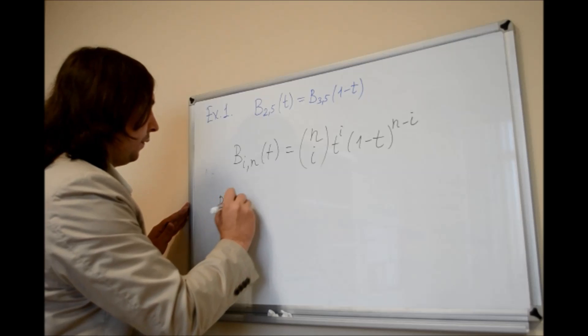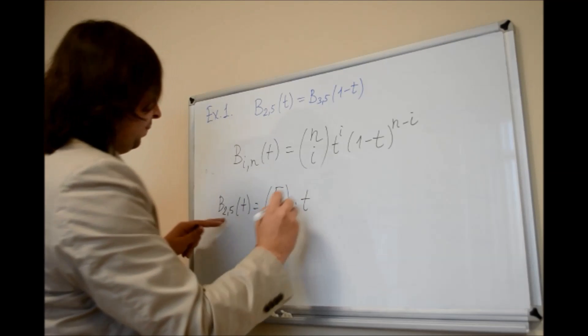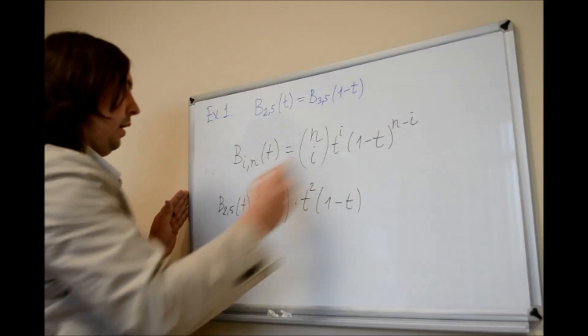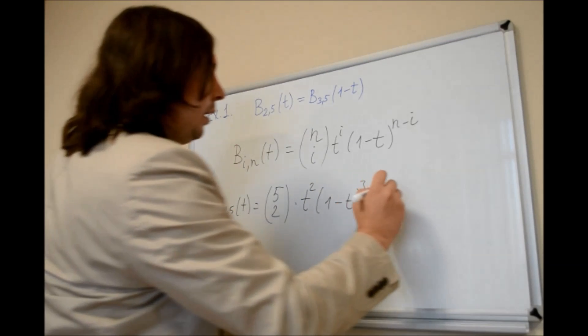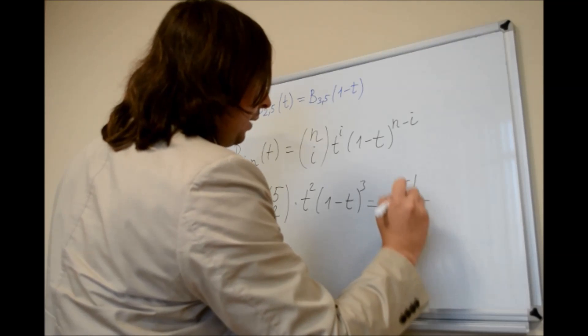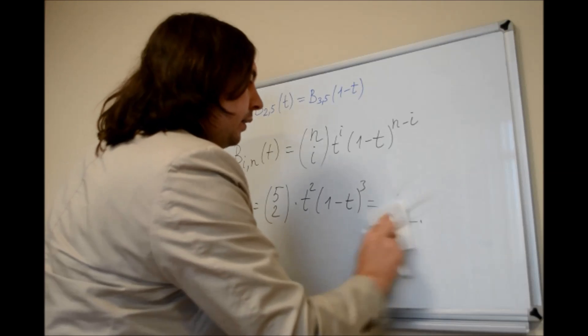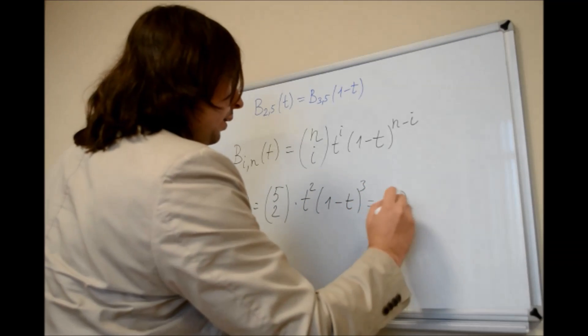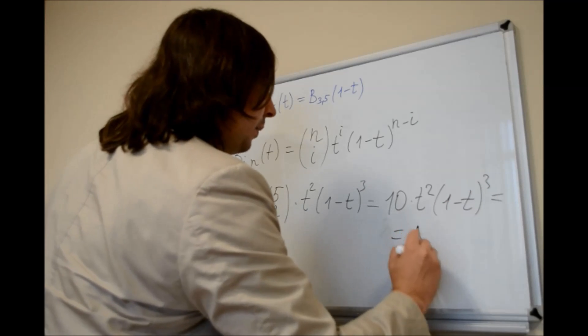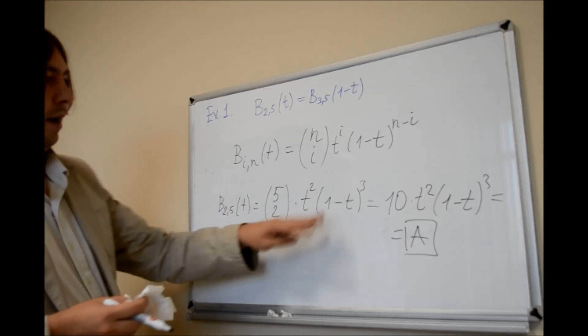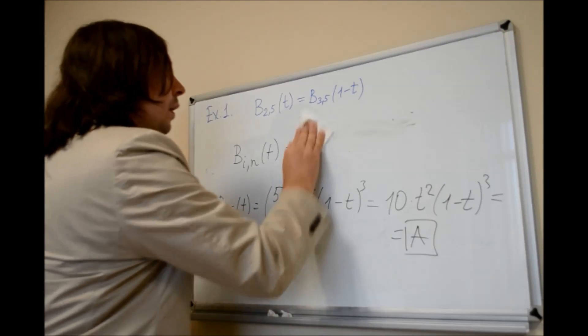The Bernstein polynomials are defined as b_i,n of t equals binomial coefficient n choose i, times t to the power of i, times 1 minus t to the power of n minus i. So b_2,5 of t equals 5 choose 2 times t squared times 1 minus t to the power of 3. The binomial coefficient equals 5 factorial over 3 factorial times 2 factorial, which equals 10. So we have 10 times t squared times 1 minus t cubed. This is a.